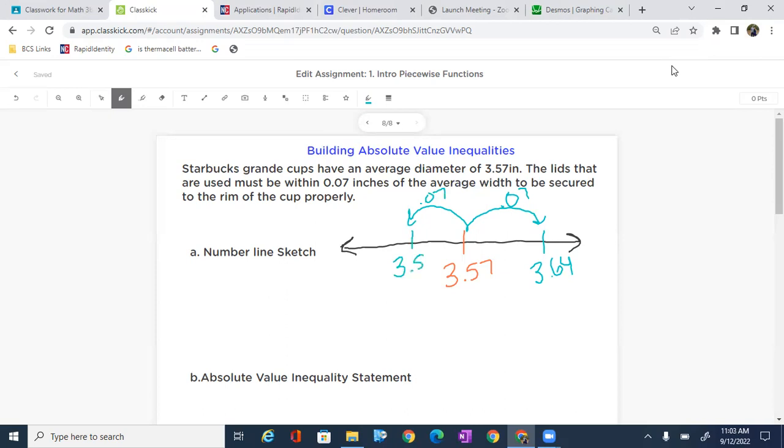So in reality, if we say l equals the lid diameter, we can already come up with our domain for this pretty easily. The lid length has got to be between 3.5 and 3.64. So I can write that as 3.5 is less than or equal to l is less than or equal to 3.64. We can also write this in interval notation. Because we have these equals, we'd use brackets. So we'd say 3.5 comma 3.64.